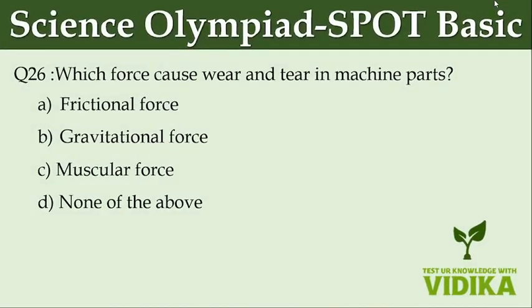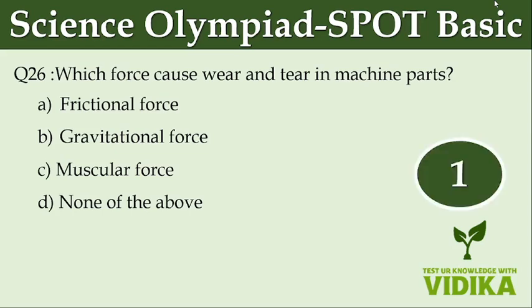Which force causes wear and tear in machine parts? Option A, frictional force. Option B, gravitational force. Option C, muscular force. Option D, none of the above.